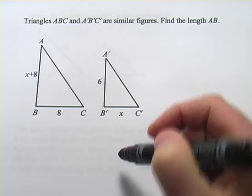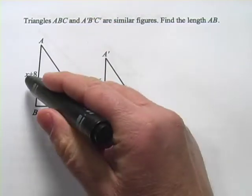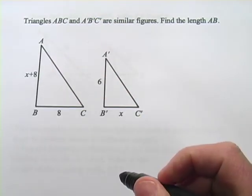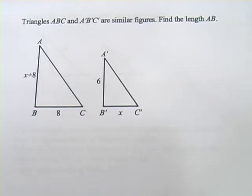We want to find this length AB which is listed as 8 plus X. Well, don't let that throw you. Let's just go ahead and set up a proportion.